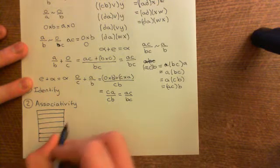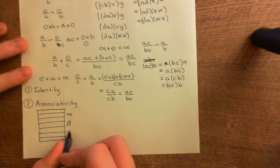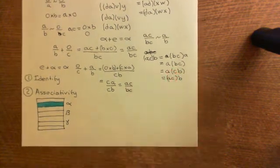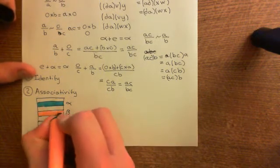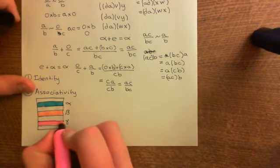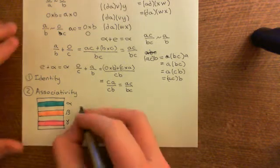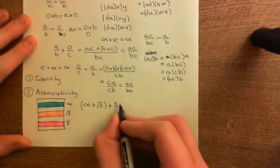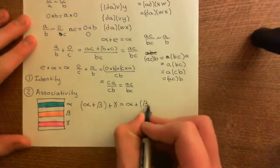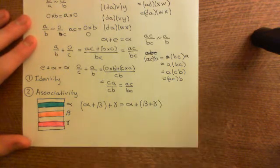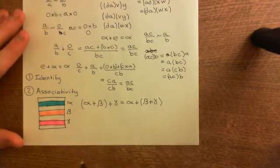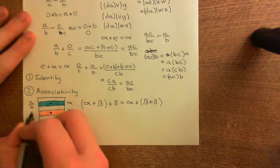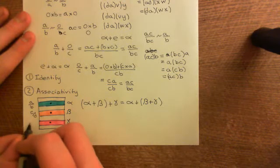We have three equivalence classes: alpha, beta, and gamma, coloured in blue, orange, and pink. We want to prove that alpha plus beta, all added to gamma, equals alpha plus beta plus gamma. We take representatives: A over B from alpha, C over D from beta, and E over F from gamma. To add alpha to beta, we find the equivalence class containing the fraction constructed from these two representatives.